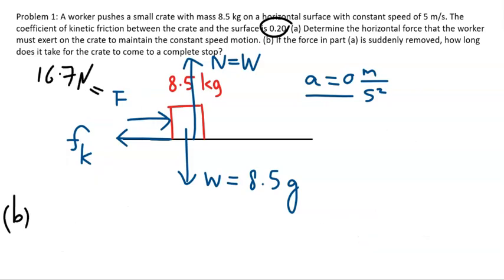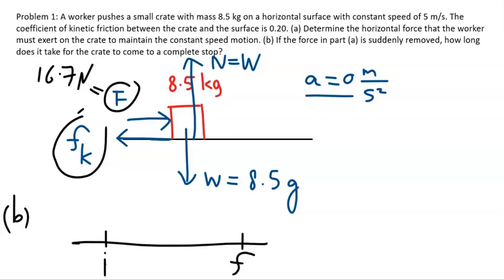For part B, we know F is 16.7 N, so the kinetic friction is also 16.7 N. If that force is suddenly removed, the object will slow down under the influence of kinetic friction. This is a kinematics problem because the only force acting — slowing down the crate as it moves — is friction.